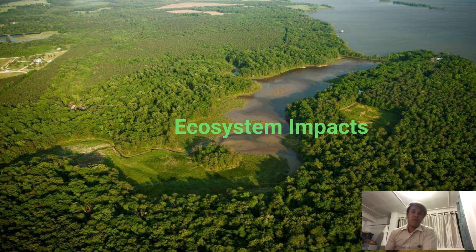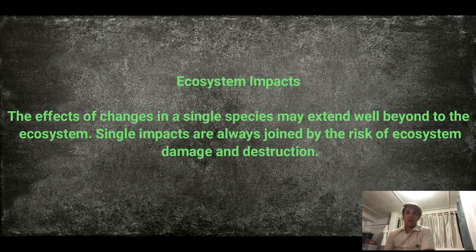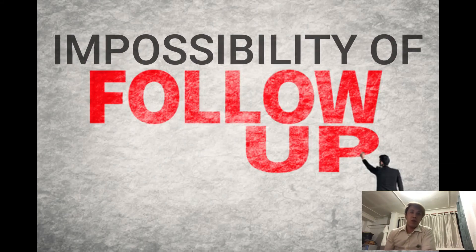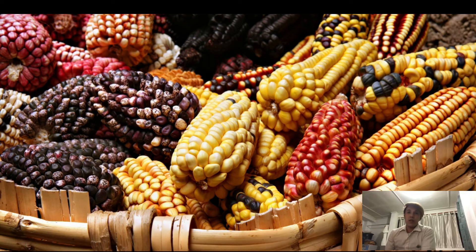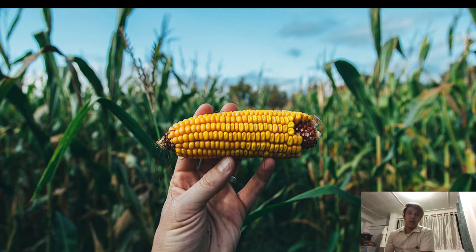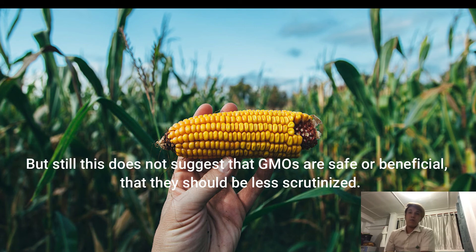The fourth risk is ecosystem impact: the effect of changes in a single species may extend well beyond the ecosystem, and impacts are always joined by the risk of ecosystem damage and destruction. The fifth is the impossibility of follow-up: once GMOs have been introduced into the environment and problems arise, it is impossible to eliminate them. Many of these risks are similar to those from introducing conventionally bred species, but this does not suggest that GMOs should be less scrutinized.